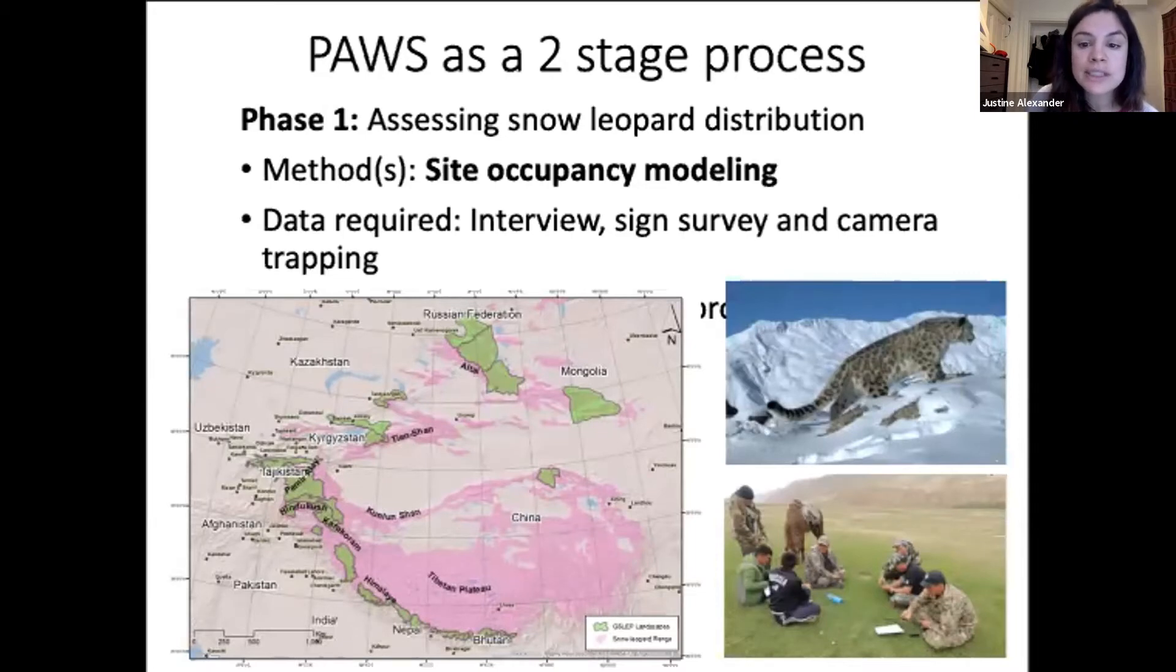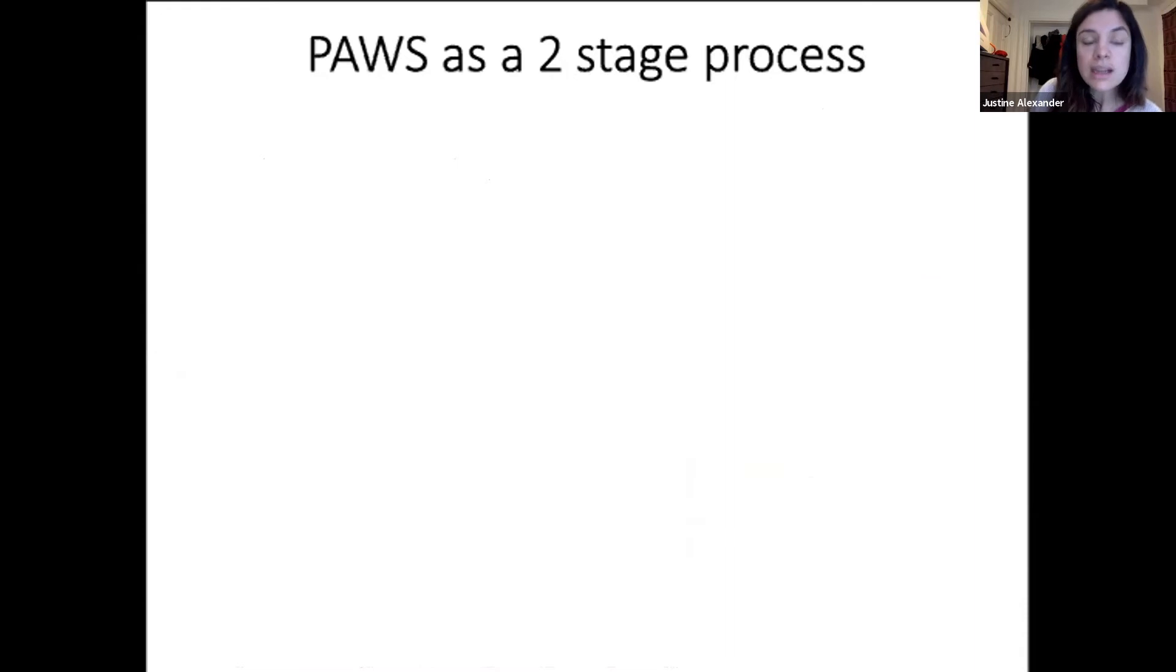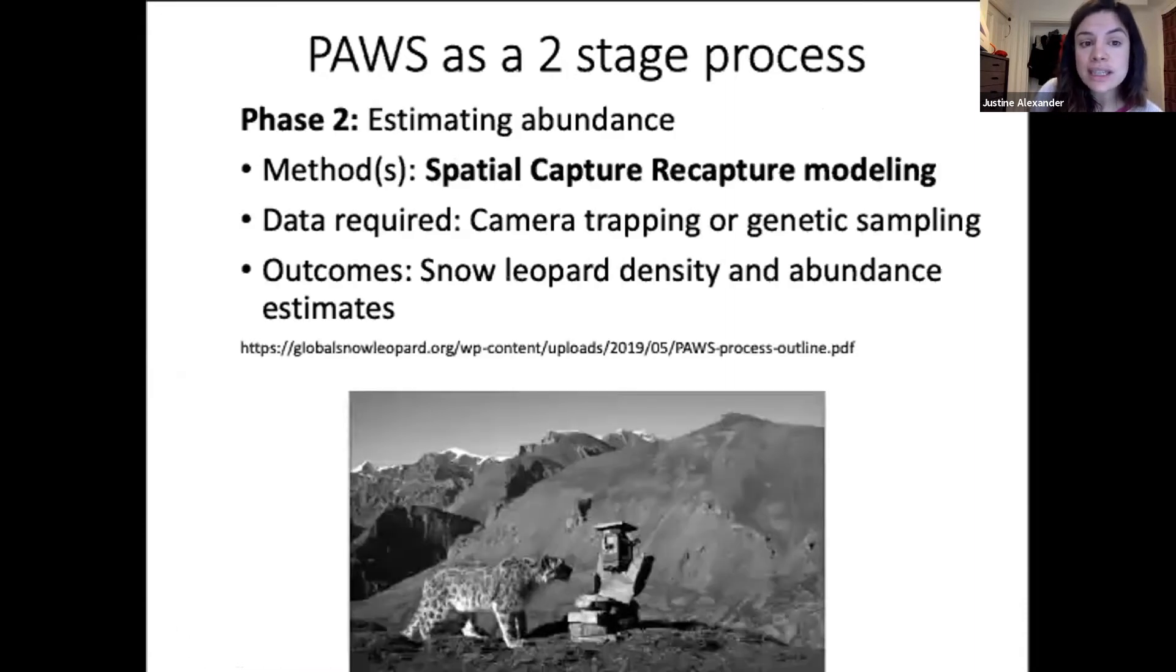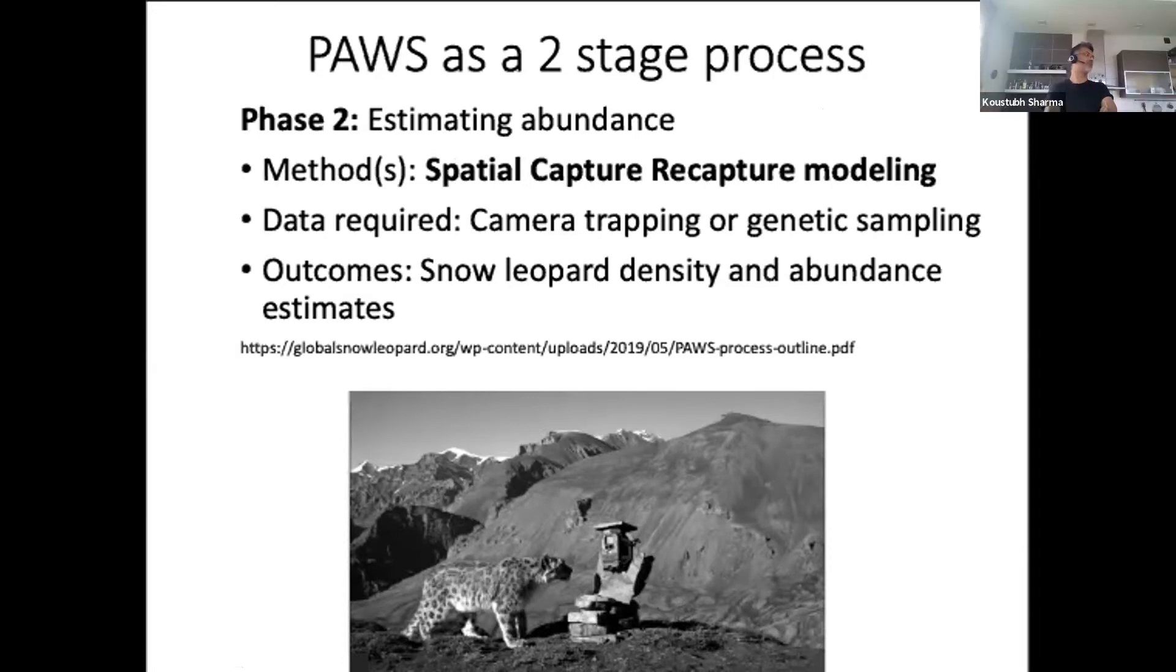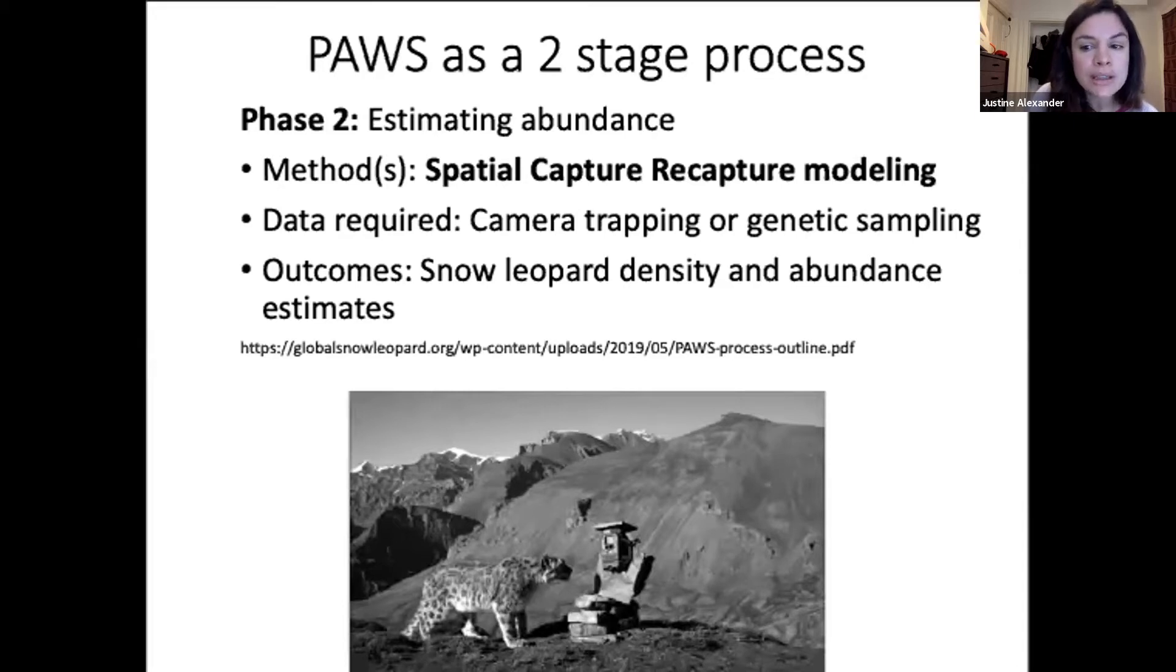The distribution maps we have today are really inadequate and require inclusion of imperfect detection. Many of them do not include this parameter, and Kustub is going to share more about this later. The second phase is related to estimating abundance using camera trapping or genetic sampling, which was covered in module one.